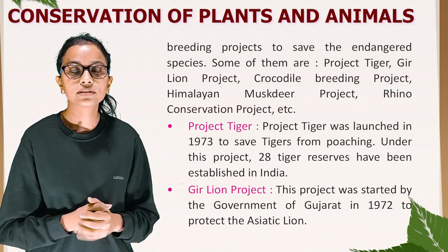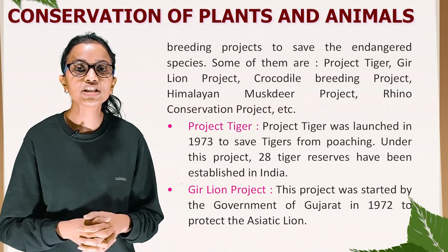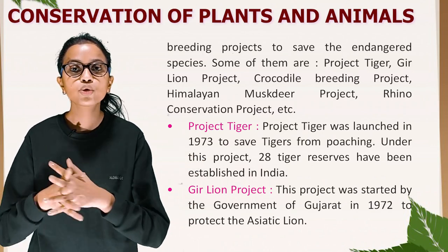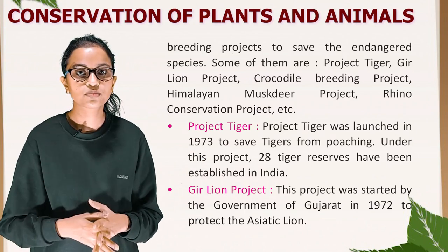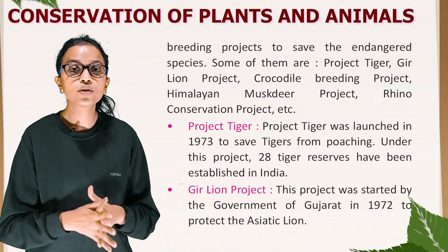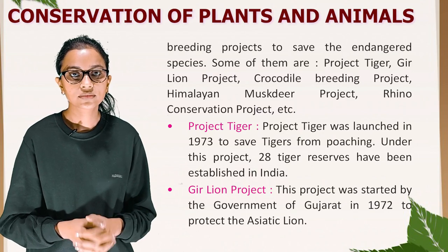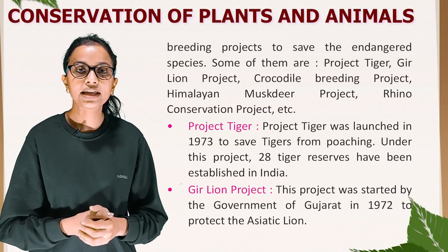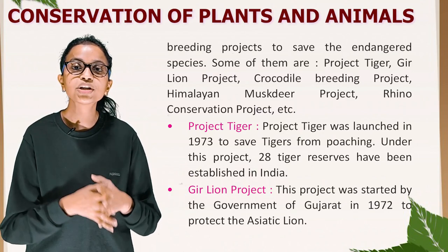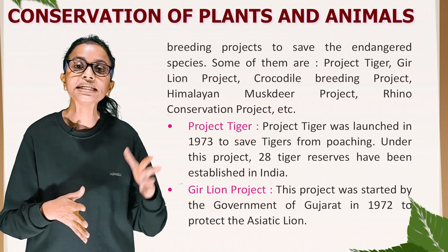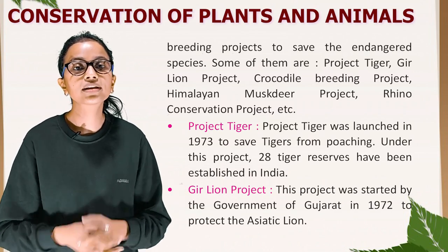Project Tiger was launched in 1973 to save tigers from extinction, and under this project 28 tiger reserves have been established in India. The Gir Lion Project was started by the government of Gujarat in 1972 to protect the Asiatic lion.